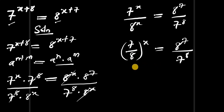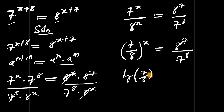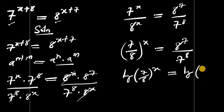Now we can introduce logarithms. We take the log of both sides: log of (8 to the power of 7 divided by 7 to the power of 8).